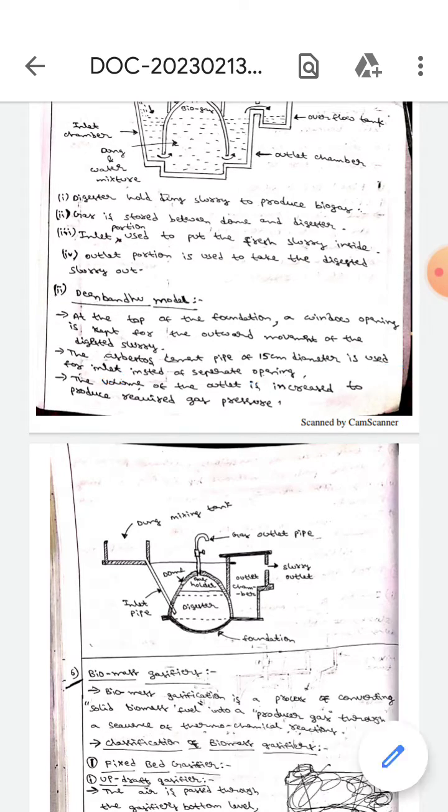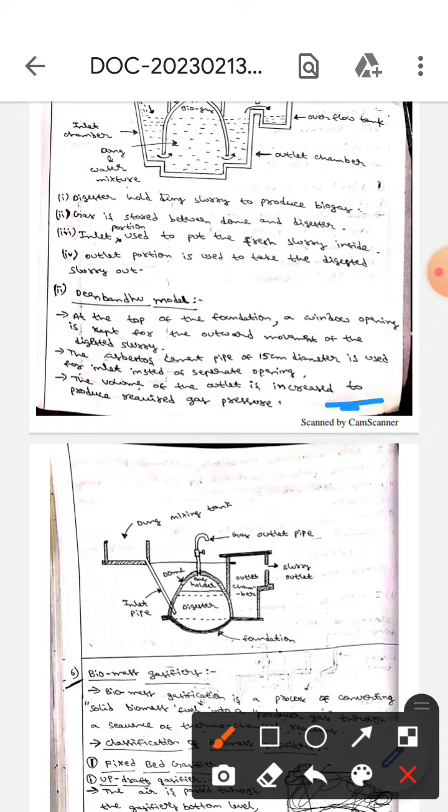asbestos cement pipe of 15 centimeter diameter is used for the inlet instead of a separate opening. Also, the volume of the outlet is increased to produce the required gas pressure.